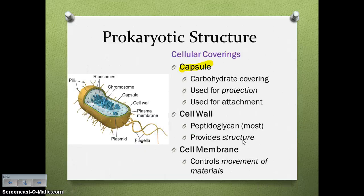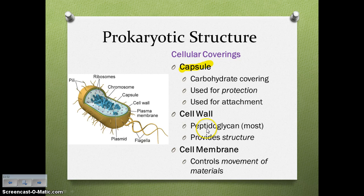Now our cell coverings. Some prokaryotes have a very outer covering called a capsule — a strong carbohydrate covering used for protection. Inside that is the cell wall, and most bacteria have a cell wall made of peptidoglycan, which provides structure and shape. Then the cell membrane controls the movement of materials in and out of the cell — osmosis, diffusion, endocytosis, exocytosis.